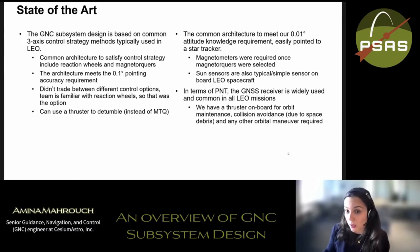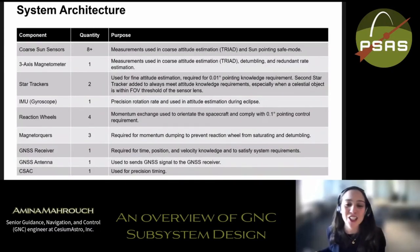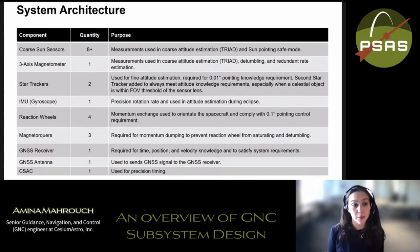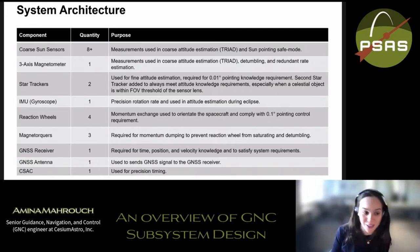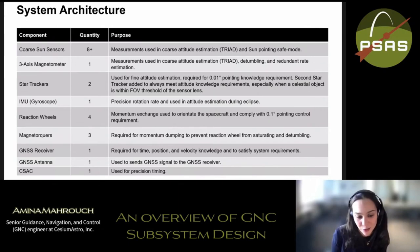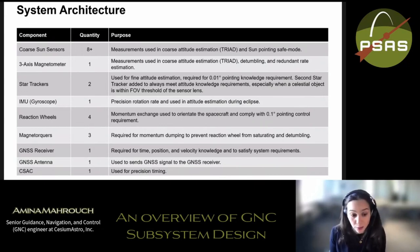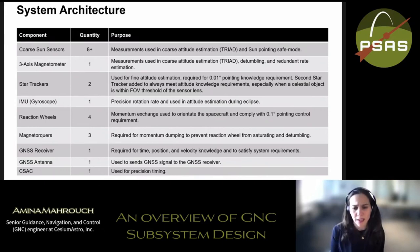This is the GNC system architecture. The system is equipped with eight coarse sun sensors, a three-axis magnetometer, two star trackers, an IMU with gyroscope and accelerometer, four reaction wheels — one redundant — three magnetorquers each aligned with a spacecraft body frame axis, a GNSS antenna and receiver, and one chip-scale atomic clock for precise timing experimentation if needed.